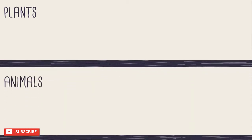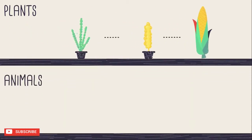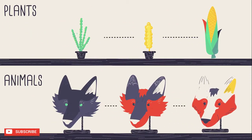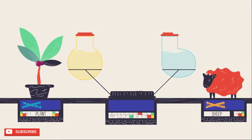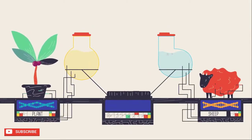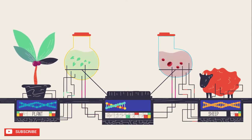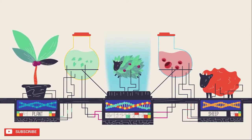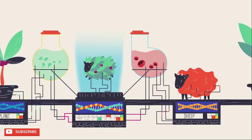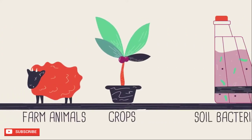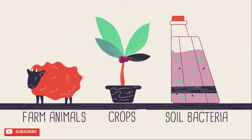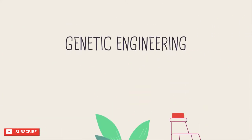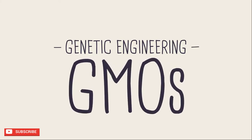Humans have been artificially altering the genomes of plants and animals for thousands of years by selective breeding. Today, with advances in genetic engineering techniques, we can speed this process up by incorporating specific new genes from one species into a completely unrelated species. Crops, farm animals, and soil bacteria are three of the most common uses of genetic engineering to make GMOs.